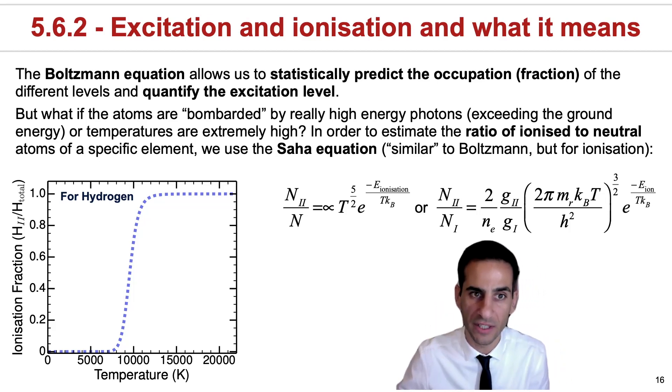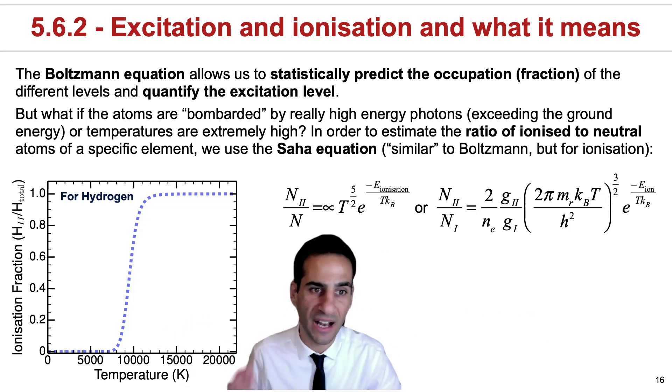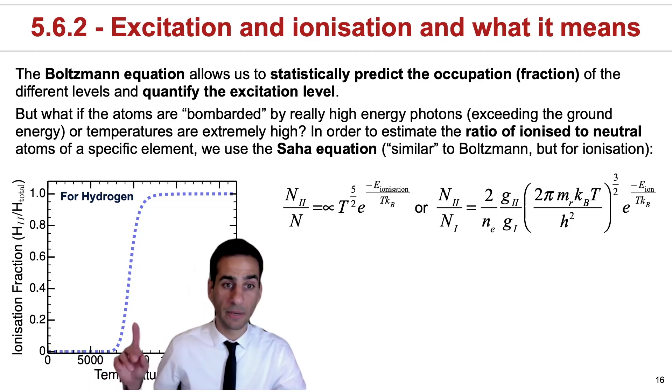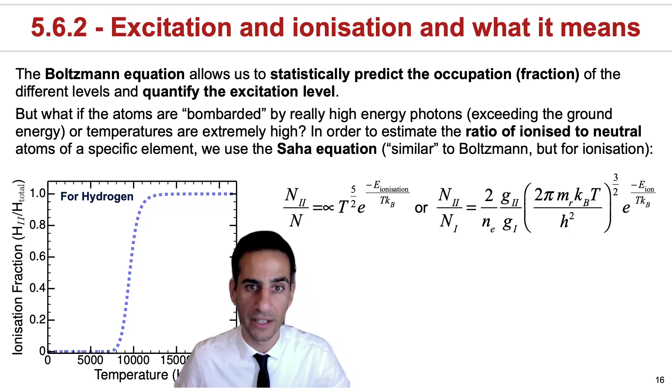For example, to predict for a hydrogen atom, and this is what you're seeing here in this plot, what is the ionization fraction as you increase the temperature. So what the Saha equation really tells you is that below temperatures of something like 6,000 and definitely 5,000 Kelvin, pretty much all hydrogen atoms are neutral. But as you go to higher temperatures, this fraction starts rising very, very quickly. And by the time you get to something like 15,000 Kelvin, pretty much all hydrogen atoms are ionized.